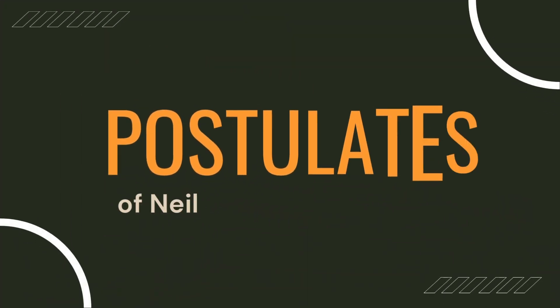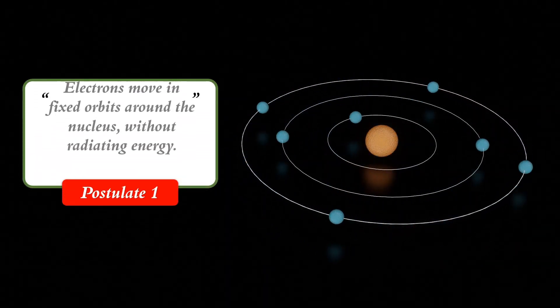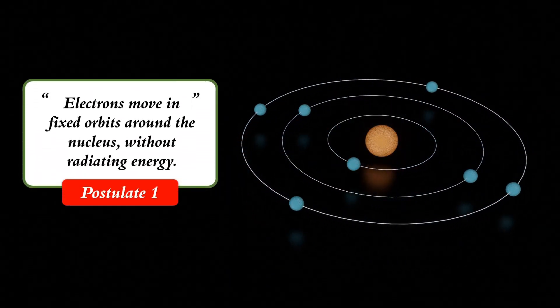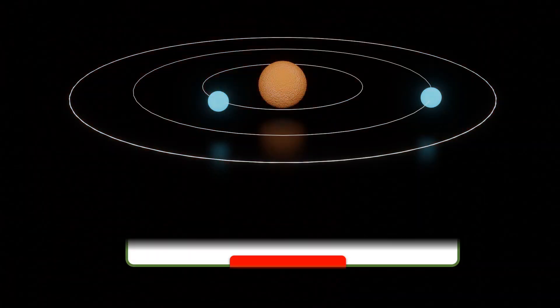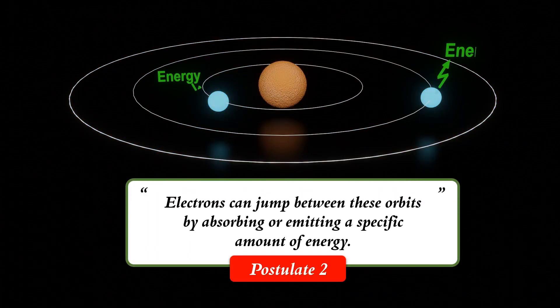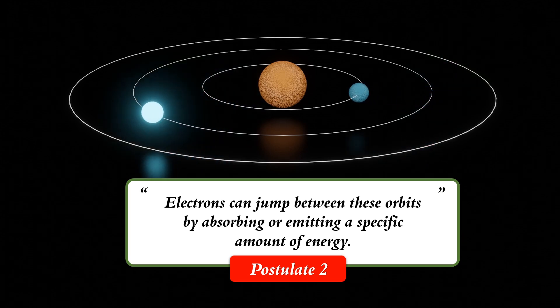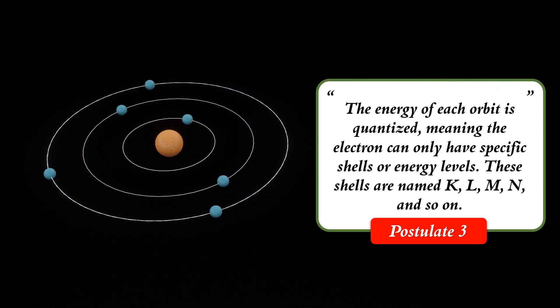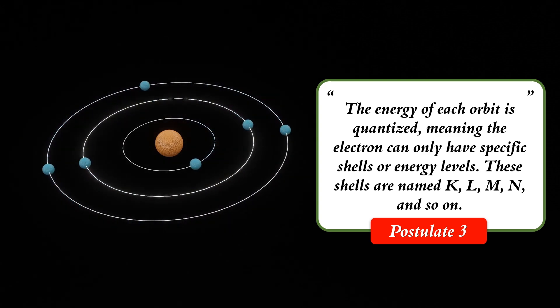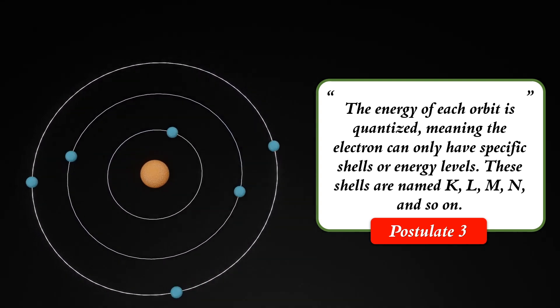Bohr's model rests on three main postulates. Let's break them down one by one. First, electrons move in fixed orbits around the nucleus without radiating energy. Second, electrons can jump between these orbits by absorbing or emitting a specific amount of energy. And third, the energy of each orbit is quantized, meaning the electrons can only have specific shells or energy levels.